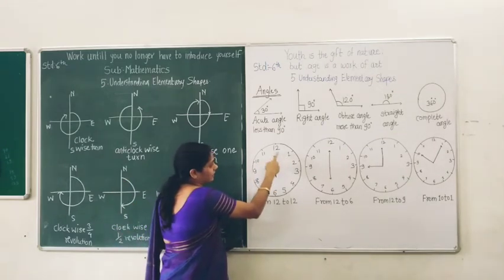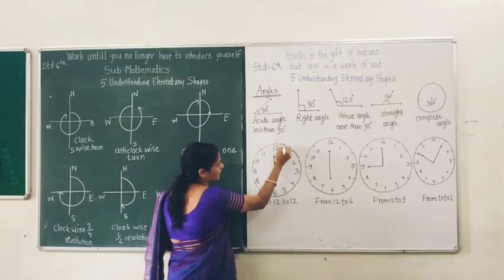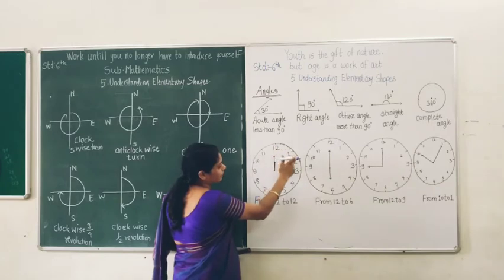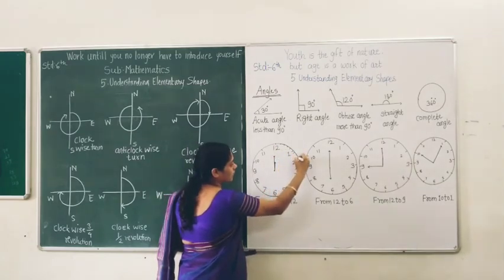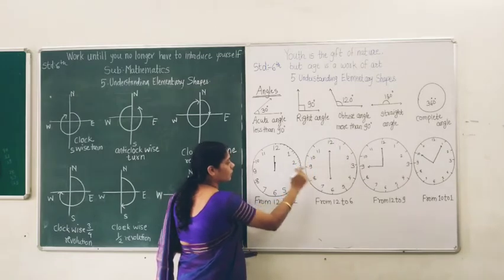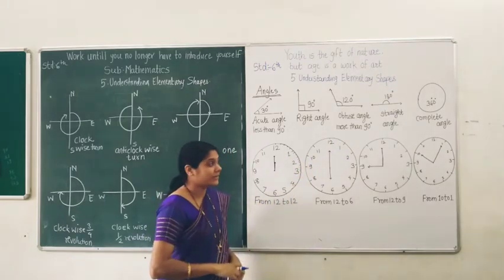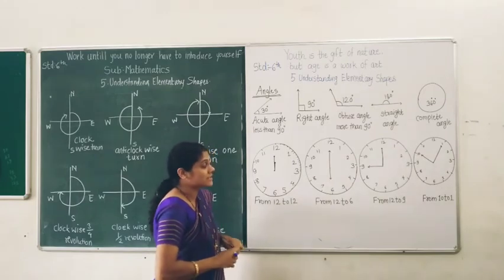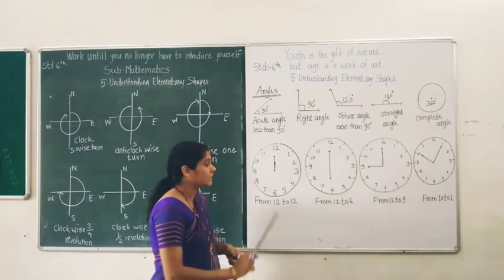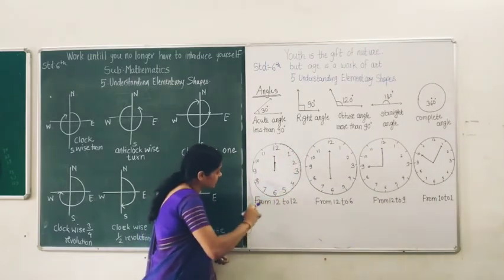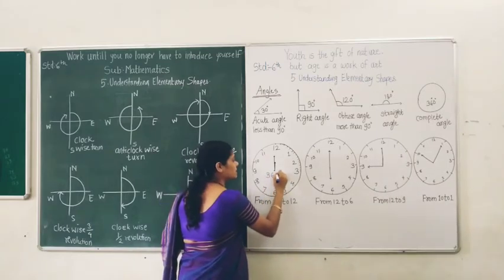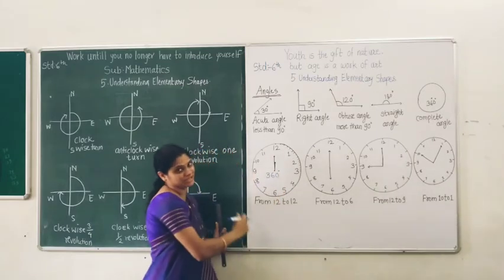Between 12 and 1 there are 5 parts, and every two consecutive numbers have 5 parts between them. Now, we have already studied that one circle measures 360 degree. That means the measure of this whole clock circle also measures 360 degree, so each full rotation is one complete angle.